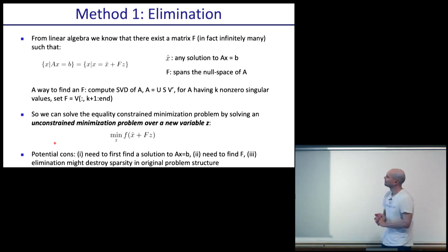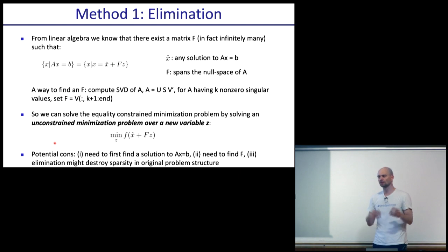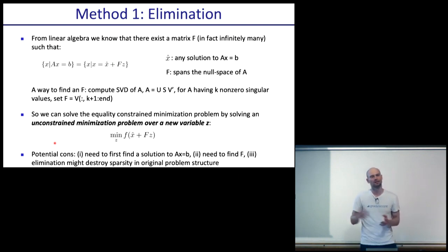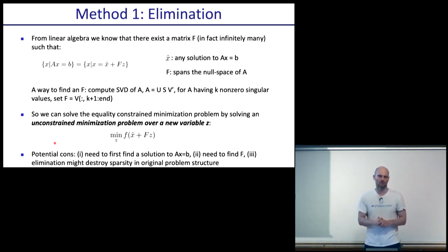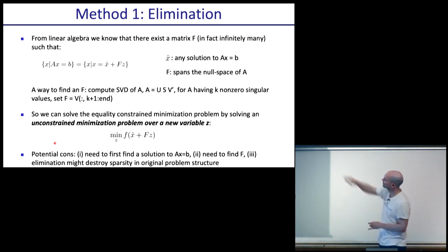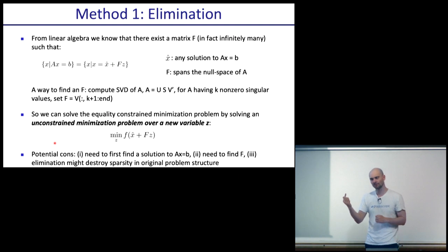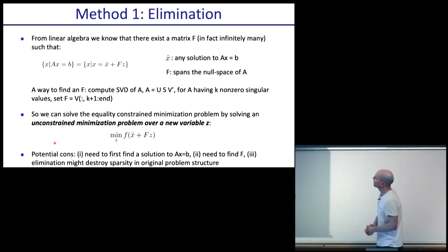Method one is elimination. When you have Ax = b with fewer equations than unknowns, there'll be a set of solutions. Linear algebra tells us x = x-hat plus F times z, where x-hat is one particular solution, F is a matrix, and z can be any vector of the right dimensions. F needs to span the null space of A, meaning A times F times z always equals zero.